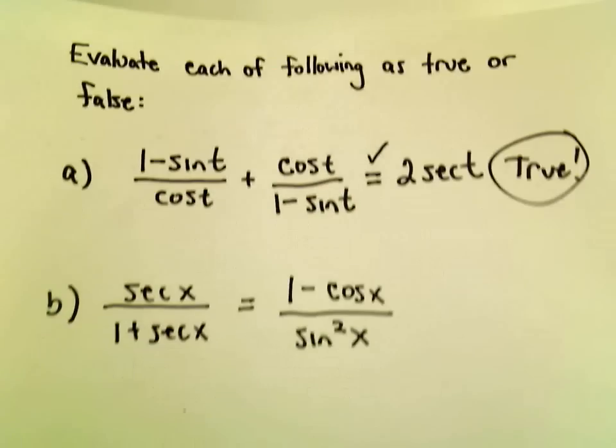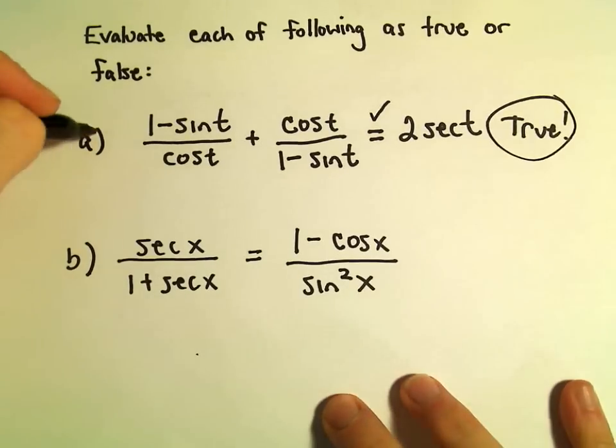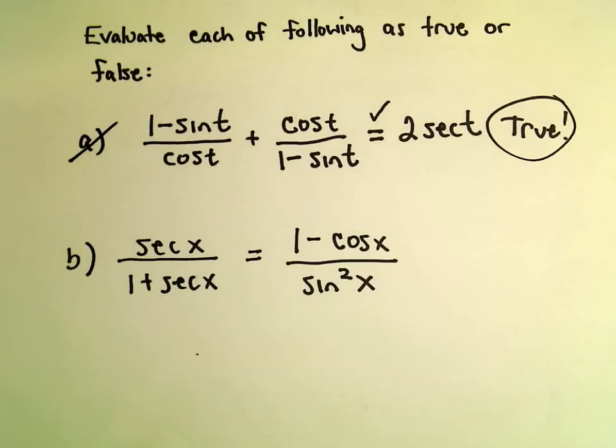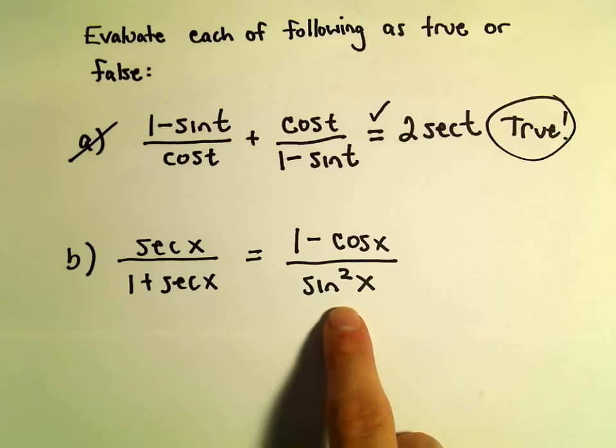Let's look at one more example of trying to show whether an identity is true or correct. Our example on part A, we said that was true. Part B, is sec(x)/(1 + sec(x)) going to be the same thing as (1 - cos(x))/sin²(x)?